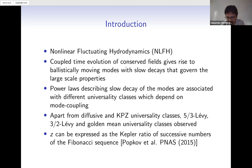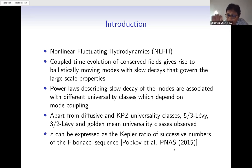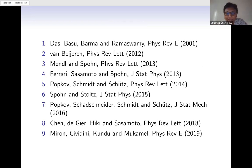Before NLFH was used, people were mainly familiar with two universality classes: diffusive and KPZ. After NLFH, people started discovering unconventional universality classes like 5/3 Lévy, 3/2 Lévy, golden mean, etc. In a particularly interesting development, Spohn showed in 2015, published in PNAS, that the dynamical exponents describing power law decay of slow modes can be expressed as the ratio of successive numbers of the Fibonacci sequence. This was a particularly striking result.